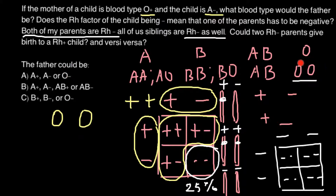If we put OO for the father and build a Punnett square, as you can see, the only possible genotype and phenotype for the progeny would also be O — genotype OO and phenotype O. That's why we cannot use this answer and must cross it out. The same applies to answer C: one of the variants there is O, and it is impossible for two parents who are both O phenotype to produce a child belonging to blood group A.